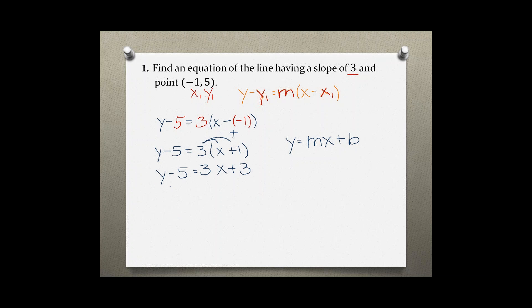Now let's add 5 to both sides. This leaves us with y = 3x + 8. So we found our equation of the line that has a slope of 3 and goes through the point (-1, 5).